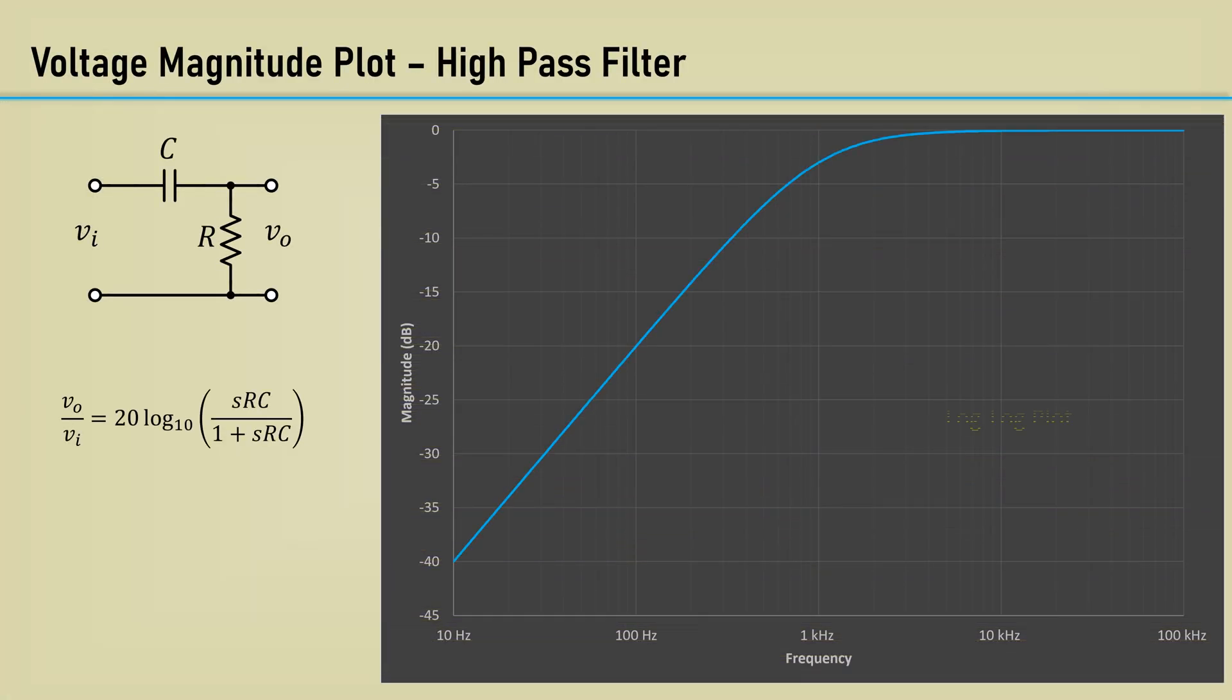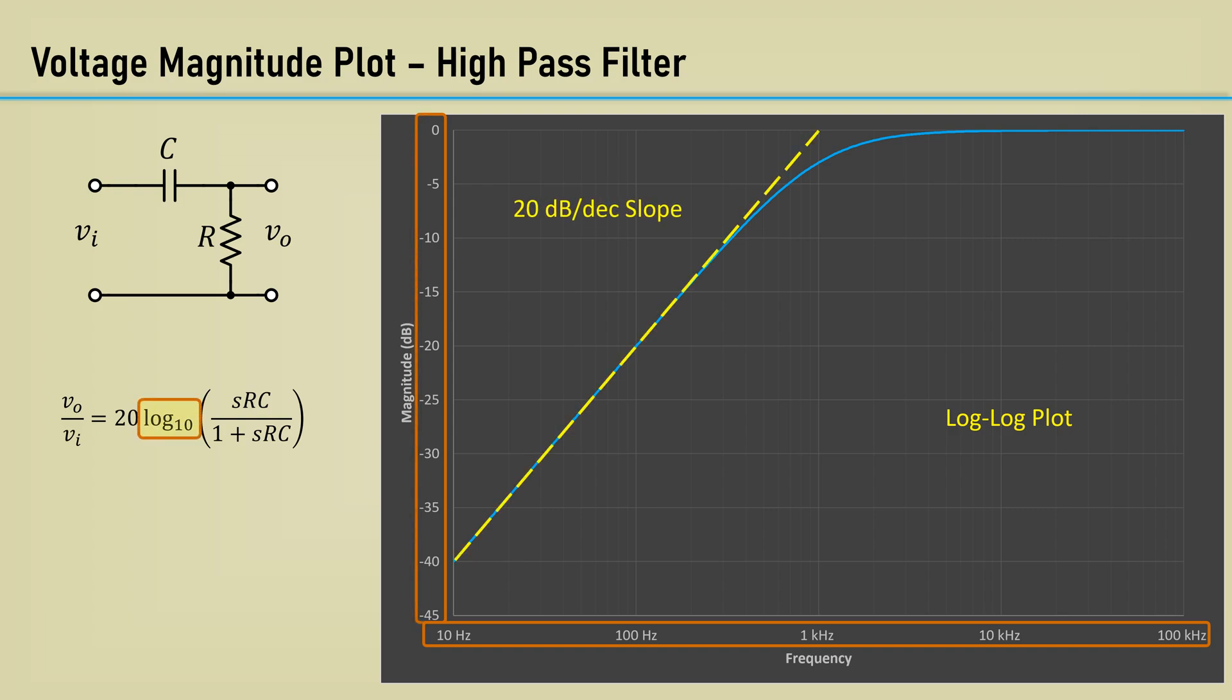You will often see a log-log plot, or a transfer function of a circuit. This is a plot of the magnitude of a single pole high-pass filter. The x-axis is log frequency. The y-axis is linear, but since it's decibels, it's logarithmic too. The roll-off is 20 dB per decade.